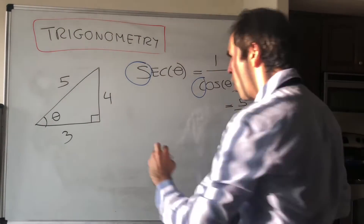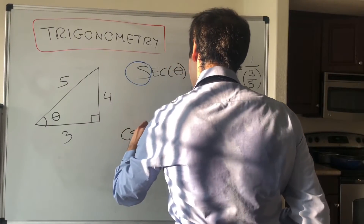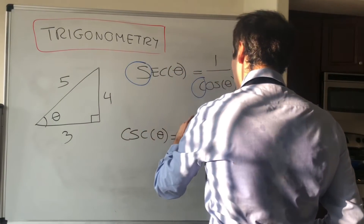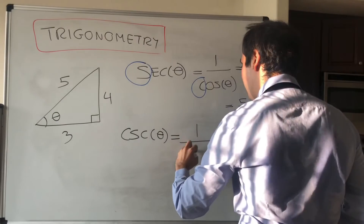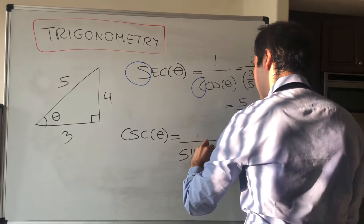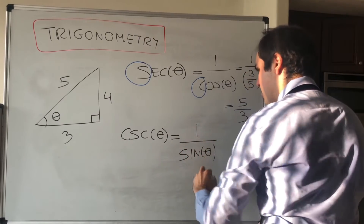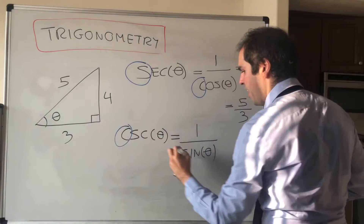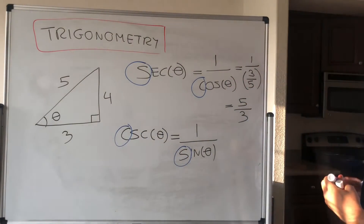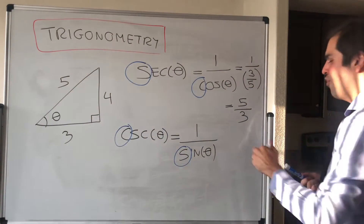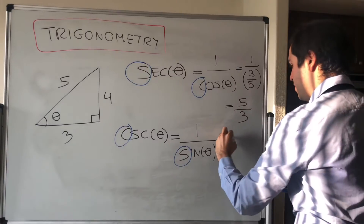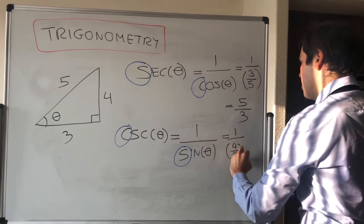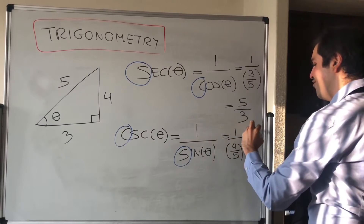Similarly, there is cosecant of theta, which is 1 over sine of theta. Remember, C goes with S. In this case, that gives you 1 over 4/5, which is 5/4.